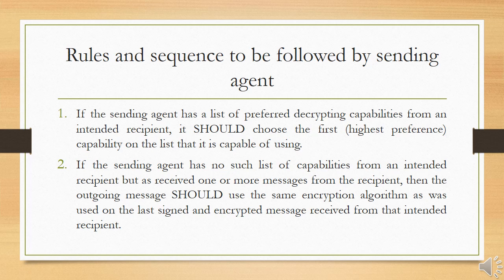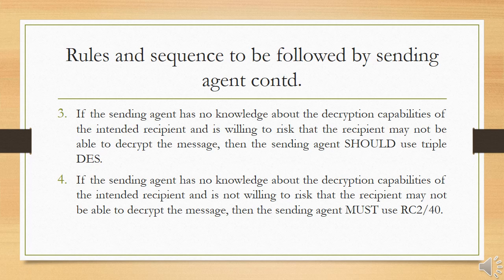but has received one or more messages from the recipient, then the outgoing message should use the same encryption algorithm as was used on the last signed and encrypted message received from that intended recipient. If the sending agent has no knowledge about the decryption capabilities of the intended recipient and is willing to risk that the recipient may not be able to decrypt a message, then the sending agent should use Triple DES.